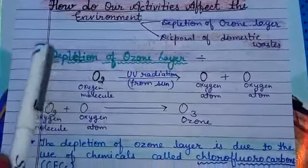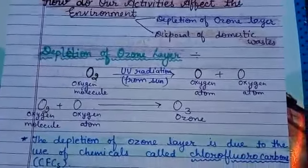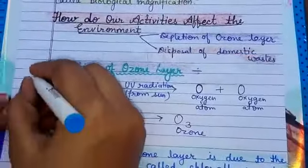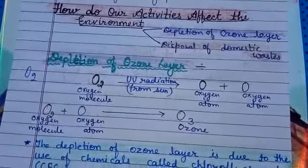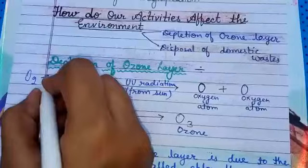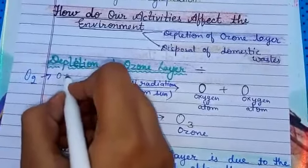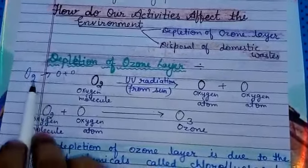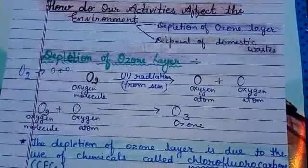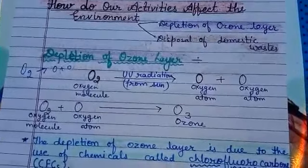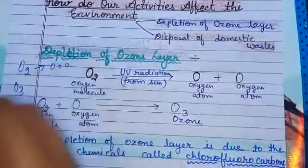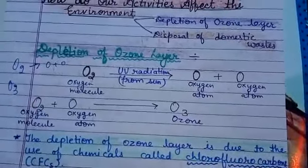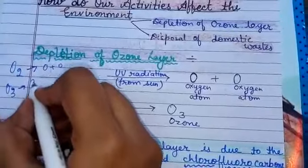Ozone layer ka depletion hona means break hona, tootona. We know that oxygen is O2. The oxygen molecule is made up of two atoms of oxygen, O and O. Oxygen gas is essential for life because it is needed in respiration. Ozone molecule is made up of three atoms of oxygen.